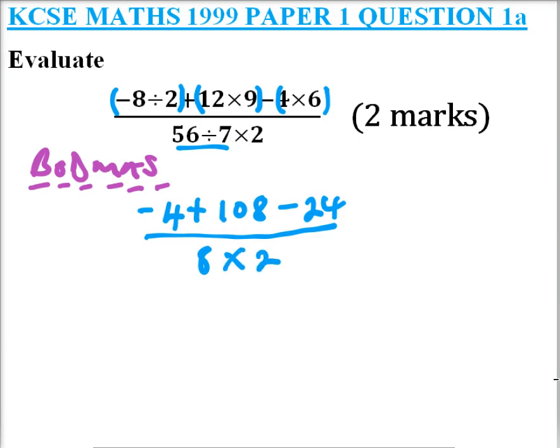From there you should be able now to work it out. So the next operation is addition. When you add minus 4 plus 108, that is 104. 104 minus 24 will give you 80 divided by 16. And when you divide 80 by 16 you get 5, so you get yourself two marks.